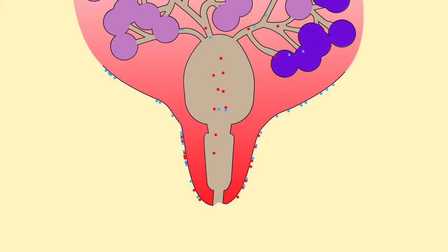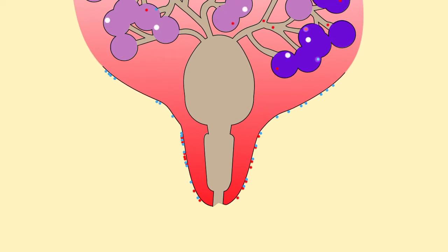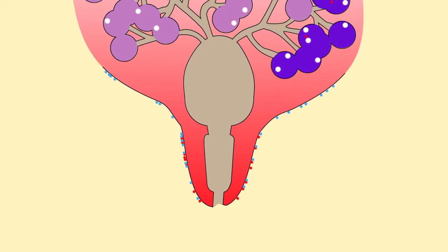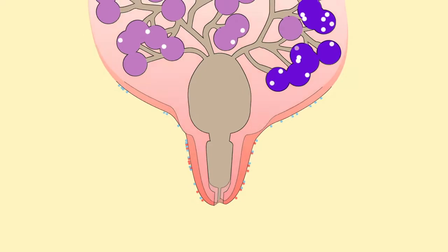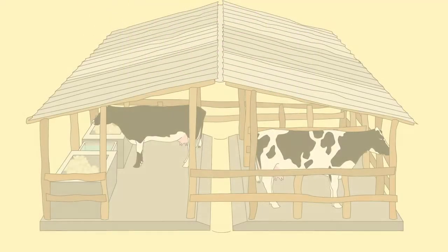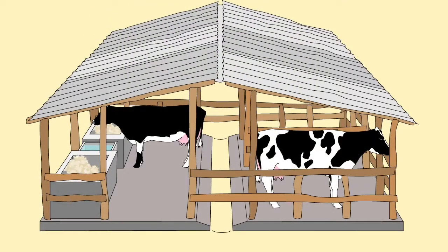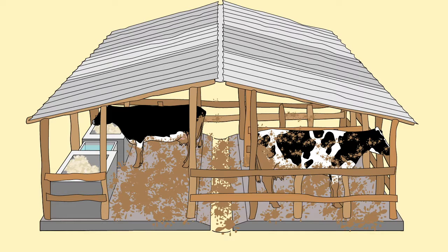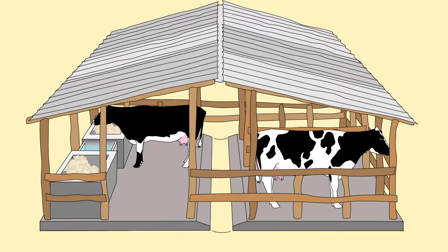Mastitis is a fight between bacteria invading the udder and the cow fighting the infection. There are many different housing systems depending on the number of cows and the space they have. Clean cows mean the system is working; dirty cows means it needs attention. Clean cows will have less mastitis.